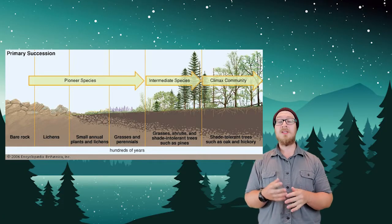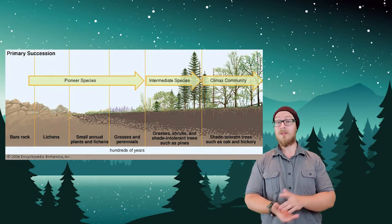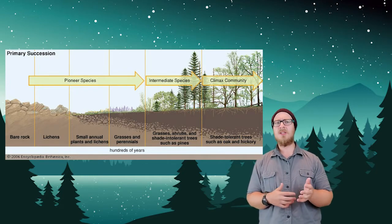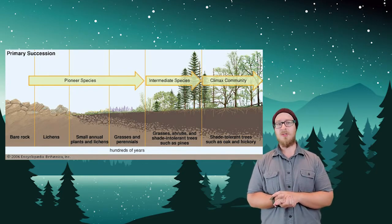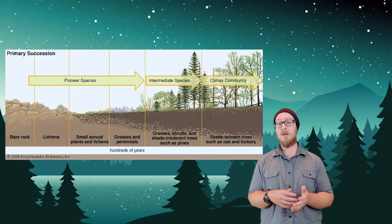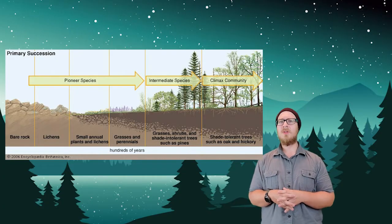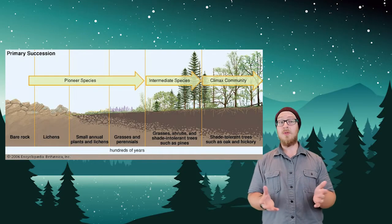These trees continue the soil building process. Eventually, these species give way to hardwood tree species that outgrow and outshade the shrubs and evergreens, resulting in a climax community.